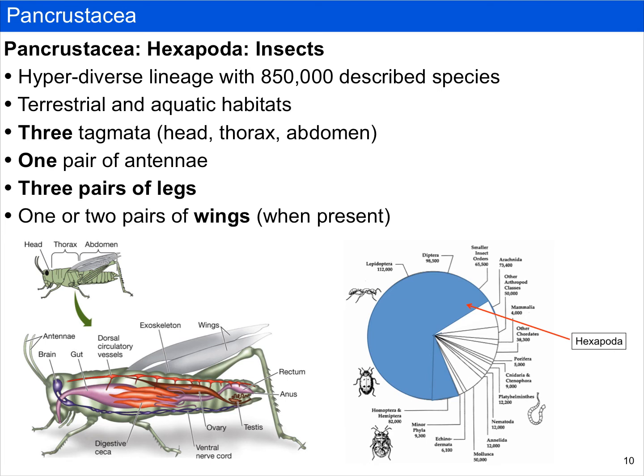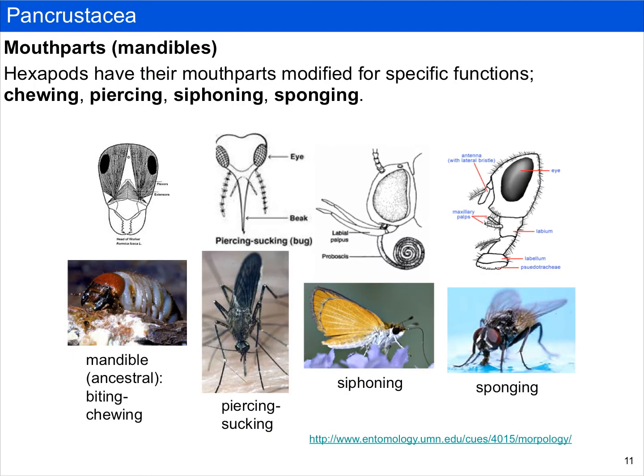They have three tagmata: a head, thorax, and abdomen, with one pair of antennae, three pairs of legs, and if present, one or two pairs of wings. Insects are among the groups within Metazoa that have evolved flight. Given their diversity, we'll spend a few more slides talking about them.